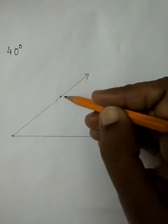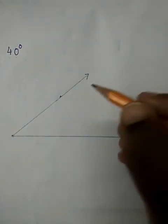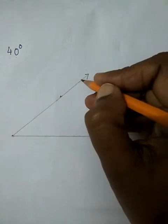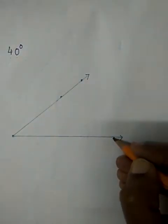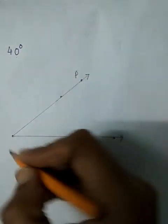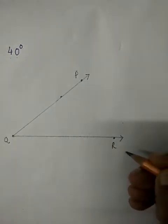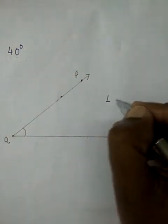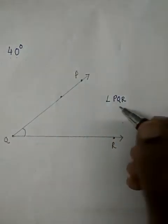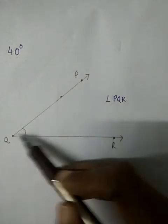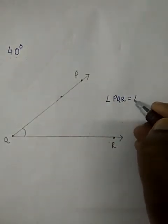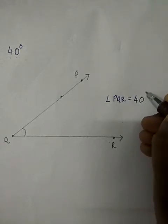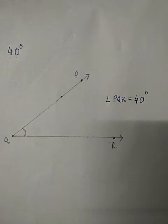Now dekho, angle ban gaya. Angle ka kya condition tha? You should have two lines and you should have a meeting point. Toh humara angle ban gaya. Ab angle banne ke baad hume kya karna hai pata hai, hame naam dena hai. So yeh teen points ka mujhe naam dena padega. So let me take any other alphabet. P, Q, R. Or mujhe angle kaise dikhana hai? So now what is my angle? My angle is angle P, Q, R. Angle likhna maine sikhaya tha. Q humesha bich mein aayega. P, Q, R. Or is angle ka mera value kitna hai? Is angle ka value mera hai 40 degree. So mera angle ban gaya, 40 degree angle ban gaya.